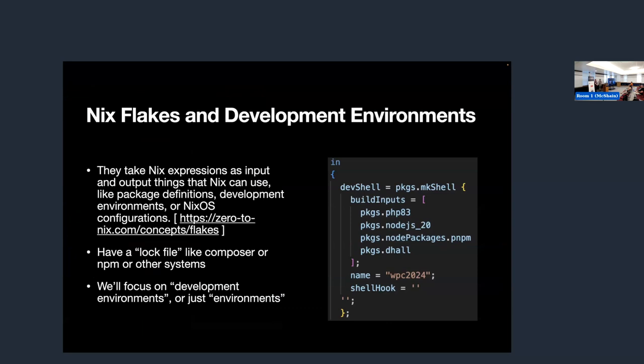Now we're going to show you a Nix expression that represents one of these local development environments. There's a lot of syntax we're not going to worry about right now. When you use what's called a flake, it has a lock file — like many other locking systems. Composer has a lock file, NPM has a lock file — it's like that. You can lock the version of these programs that come down.